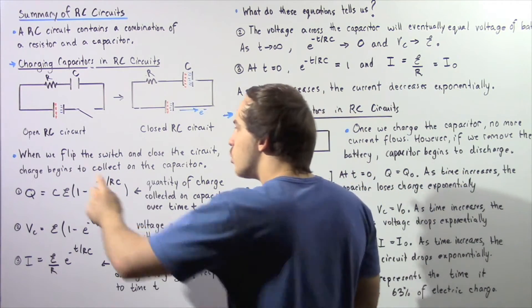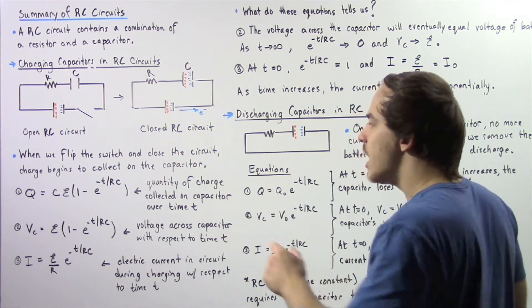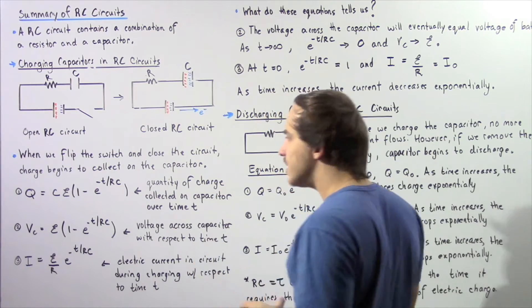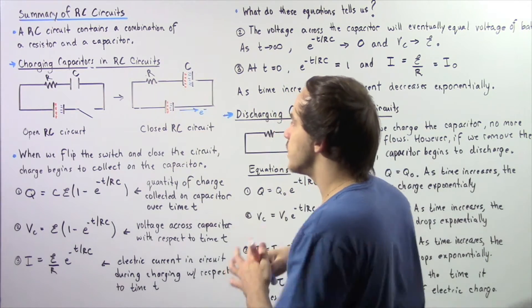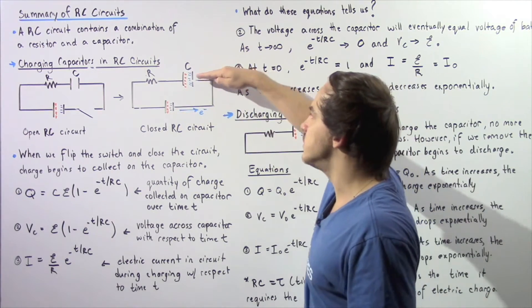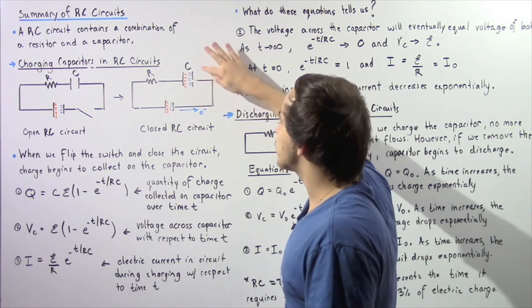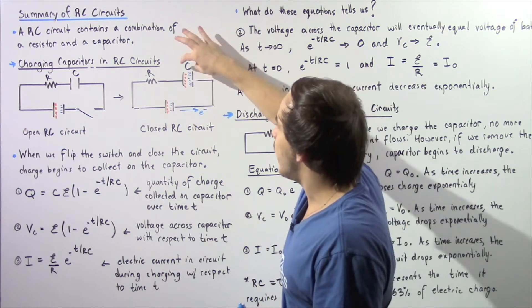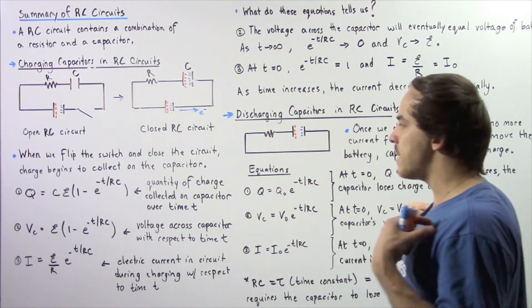Now let's suppose we flip our switch so that we have a closed RC circuit. When we flip that switch, charge begins to accumulate on the plate of our capacitor, because electrons begin to flow from the lower potential side of our battery to the higher potential side. As those electrons flow, they begin to accumulate on one plate, pushing electrons away from the other plate. Now we have a separation of electric charge and a voltage difference exists between the plates of our capacitor.